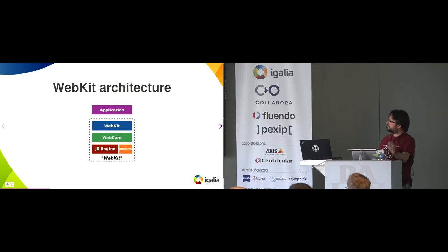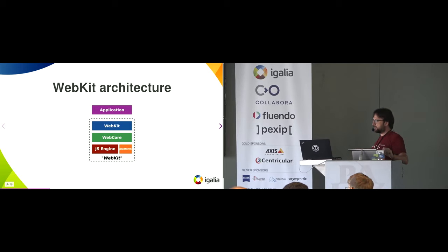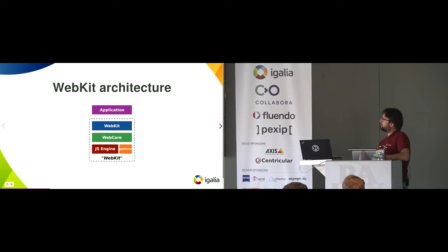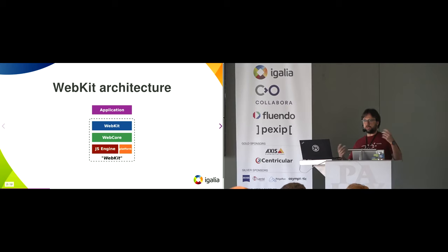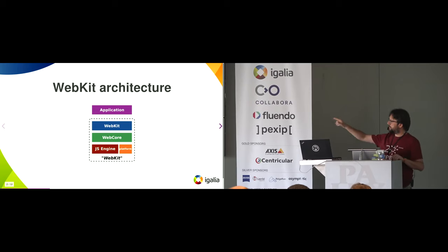The WebKit architecture is more or less like this. You have the application — in this case, what you usually call, in a browser, the Chrome. That is not just Google Chrome; the Chrome is the toolbars and everything that runs the browser. And then you have WebKit, which is the layer taking care of all the multi-processes. Then you have WebCore, which does all the rendering, parsing the CSS, parsing the HTML and all those things. Then you have the JavaScript engine. Then you have the platform code, and that's where GStreamer is — in the platform part.